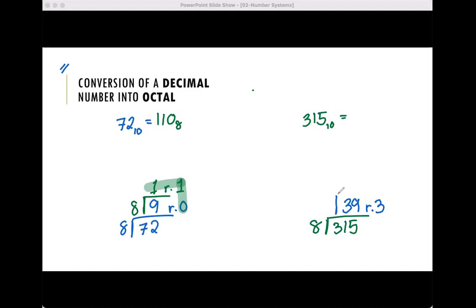Let's divide it again by 8. 39 divided by 8. The nearest is 32, so that's 4 with a remainder of 7. Now we can no longer divide 4 by 8, so this will be our answer: 473 base 8.